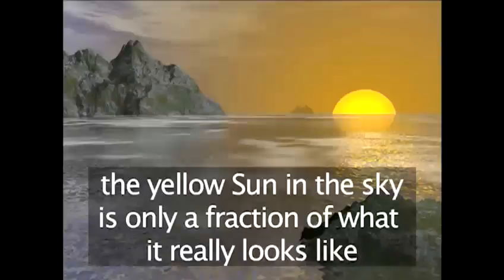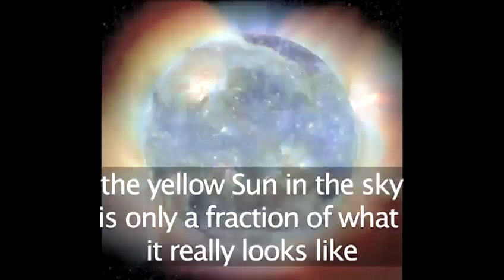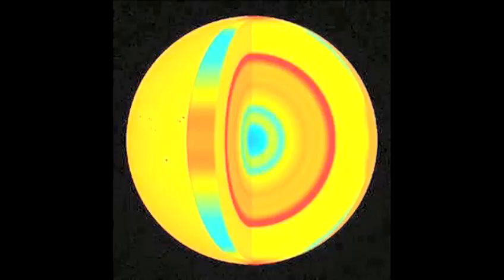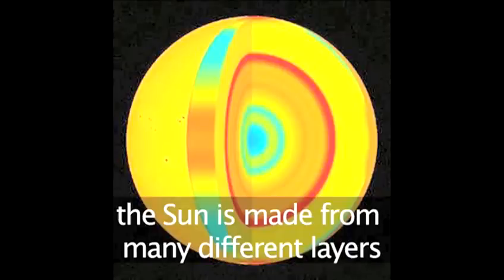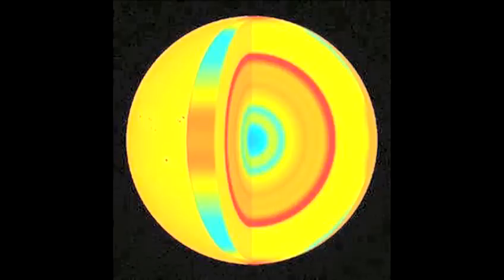The visible yellow sun you see in the sky is only a part of what makes up the sun. If we could take a slice through the sun, we could see it is made up of many different layers.